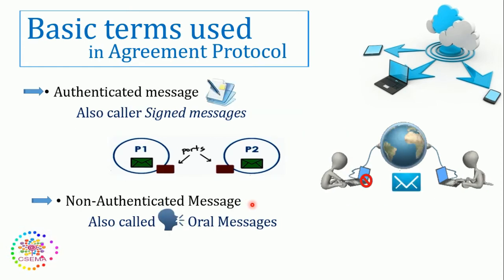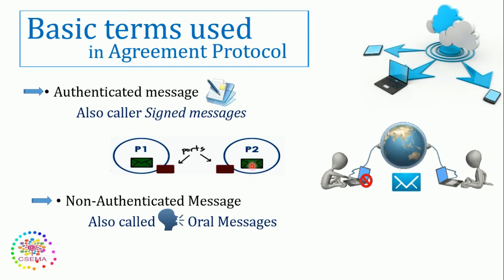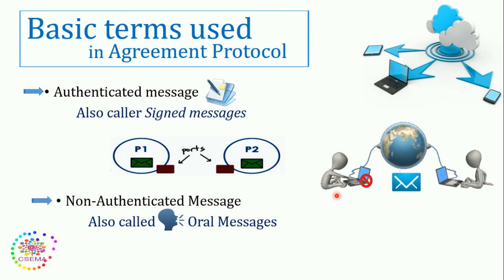Here we have two more terms: authenticated message and non-authenticated message. An authenticated message is also known as a signed message. When a process receives a message from another process, it should know that it is an authenticated message, and it also has information about the owner. When any faulty server process sends a message, another faulty process must receive that message and there won't be any compromise on the messages. A non-authenticated message is also known as an oral message.